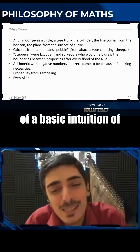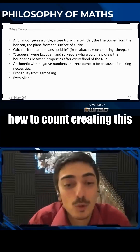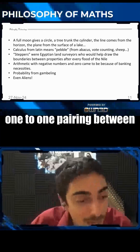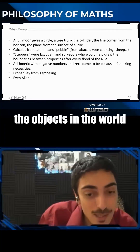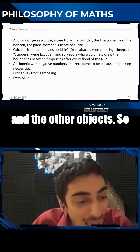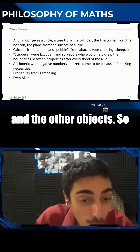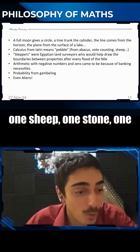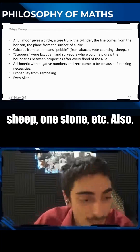This is a basic intuition of how to count — creating a one-to-one pairing between objects in the world and other objects. One sheep, one stone; one sheep, one stone.